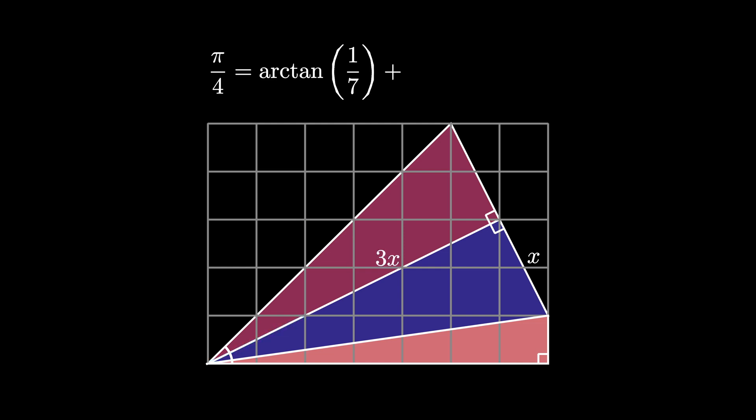Therefore the angle that was in the blue triangle, which is now made up of the two angles inside the purple and the dark red triangle, must be 2 times the arctangent of x over 3x. But we can simplify x over 3x to 1 third, and we get that pi over 4 equals the arctangent of 1 seventh plus 2 times the arctangent of 1 third.